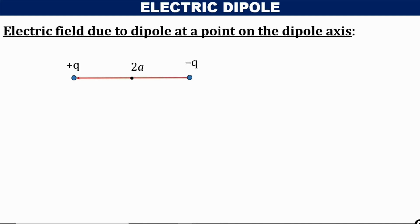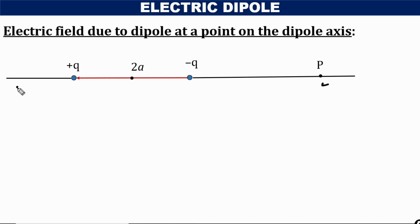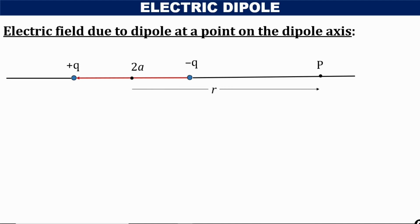Now we are going to find out the electric field due to a dipole at a point on the dipole axis. We draw the axis — the line joining the two-point charges — and extend it on each side. We are trying to find the electric field at any point P on the axis. The distance R of the given point P from the center of the dipole is much larger than the distance of separation 2a between the two-point charges.